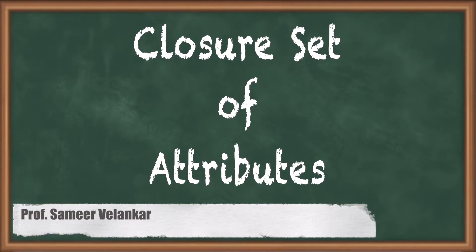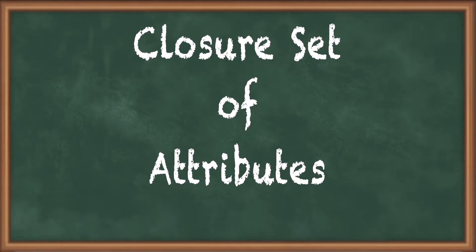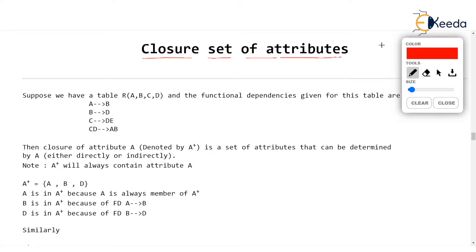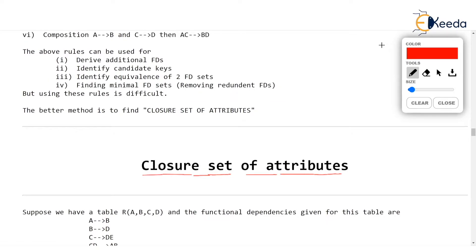Hello dear students, I am Samir Velankar. I welcome all of you to this fifth video on normalization theory. In this video, we will be learning what do you mean by closure set of attributes. We are learning this topic just for learning how to solve four problems: derive additional FDs, find out candidate keys, find out whether two FD sets are equivalent, and minimize the FD set. That's why we are learning closure set of attributes. Let's see straight away with an example.